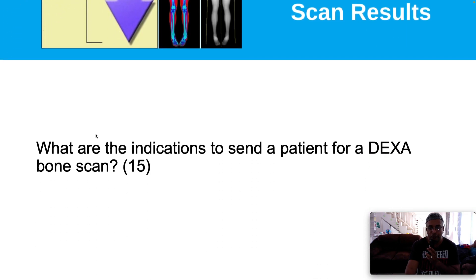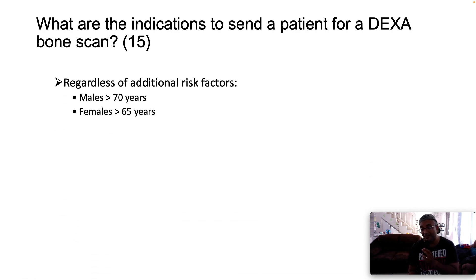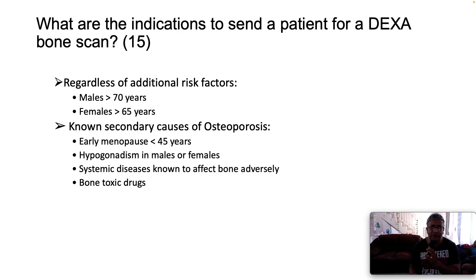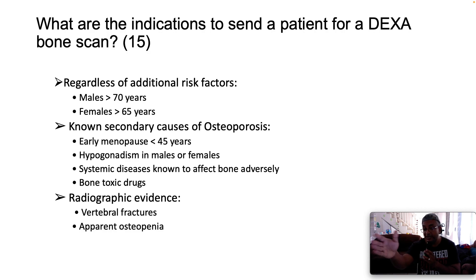What are the indications to send a patient for a DEXA bone scan? There are 15 marks here. Regardless of additional risk factors: any male above 70 years, any female above 65 years. If the patient has a known secondary cause for osteoporosis — which includes early menopause (before age 45), hypogonadism in males or females, systemic diseases known to adversely affect bone such as myeloma or Cushing's syndrome, bone-toxic drugs, and celiac disease.